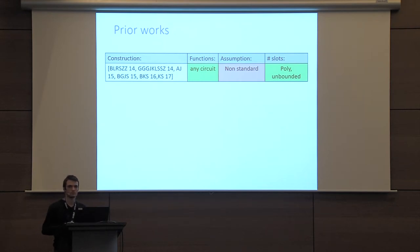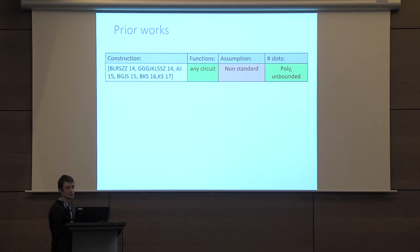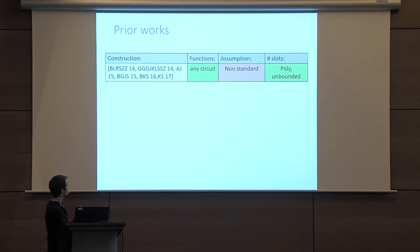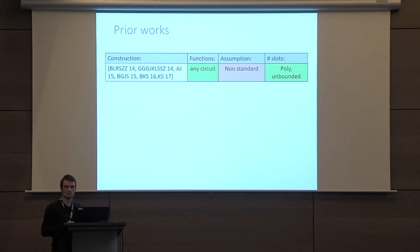Let me present some known results about multi-input FE. It is possible to build multi-input FE for any general circuit. There are many constructions supporting polynomially many slots or even unbounded for some constructions. But they are all based on non-standard assumptions — for example, indistinguishability obfuscation for general circuits, multilinear maps, or even stronger notions of obfuscation. Other works have built multi-input FE from single-input FE for general circuits, but again we don't know how to build these from standard assumptions.